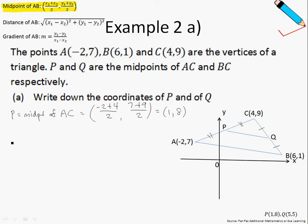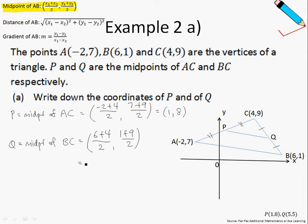Let us move on to find the coordinates of Q. Similarly, we will be making use of the midpoint formula. Now Q is the midpoint of BC, so we will take the x-coordinate of B, which is six, plus the x-coordinate of C, which is four, divided by two, comma, the y-coordinate of B, which is one, plus the y-coordinate of C, which is nine, divided by two. Pressing this into my calculator, I end up with the point (5, 5). So the coordinates of Q is (5, 5) and the coordinates of P is (1, 8). This is just a simple application of the midpoint formula.